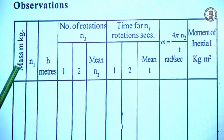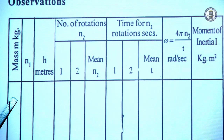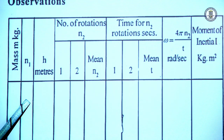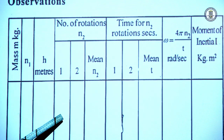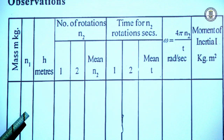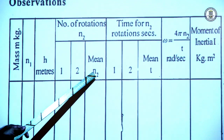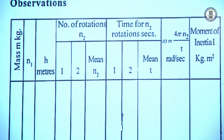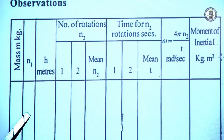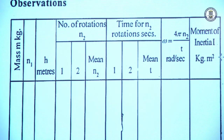For the table column: we suspend a certain mass — say 200 grams. n₁ is say 5 or 6. h is measured from the ground. The number of rotations n₂ is determined twice for the same mass and same number of turns, and the mean n₂ is calculated. The time for both trials is recorded and the mean t is calculated. Then omega is calculated as 4πn₂ / t, and the moment of inertia I is calculated. The experiment is then repeated for another value of mass.